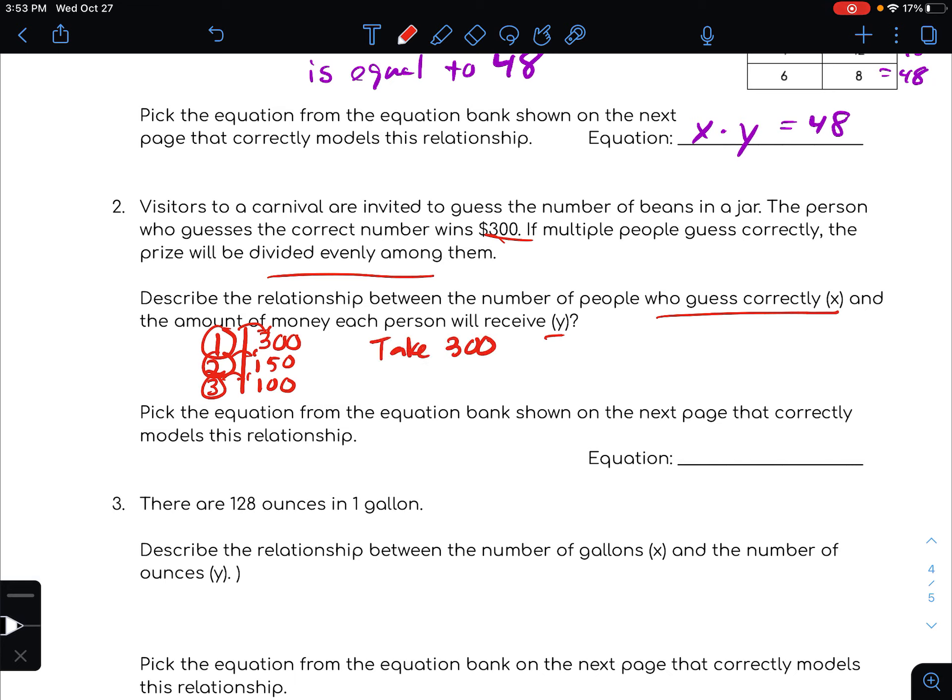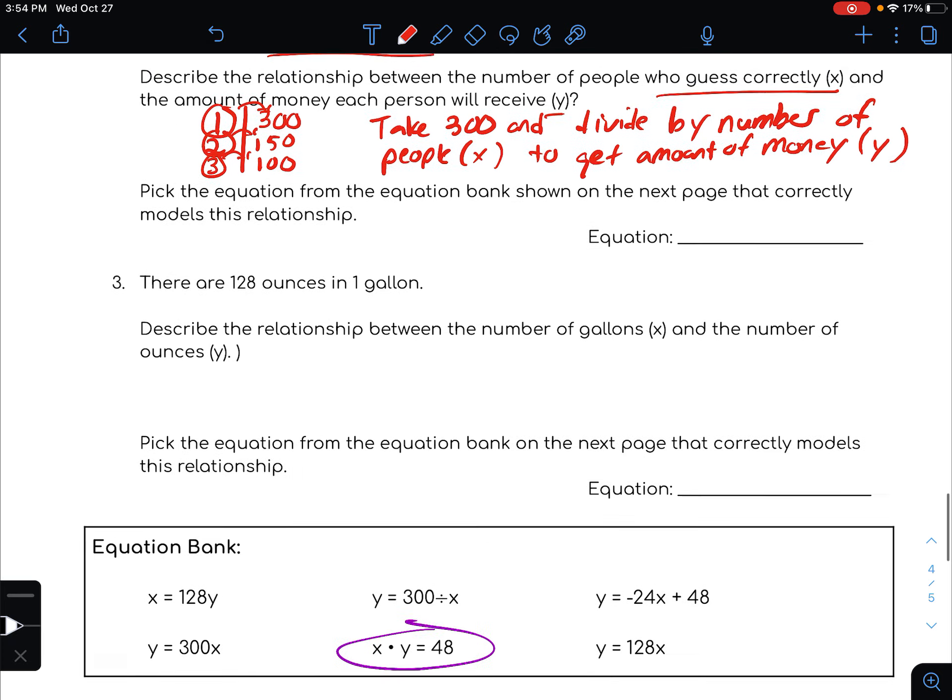So we'll take 300 and divide by the number of people, which is x, to get the amount of money, which would be the number of people. All right, so 300 divided by x should be equal to the y value.